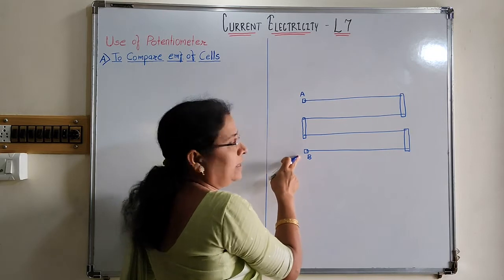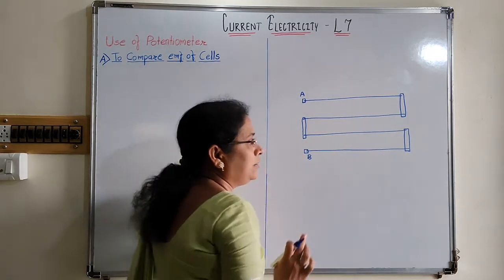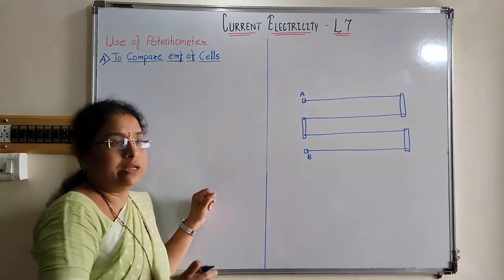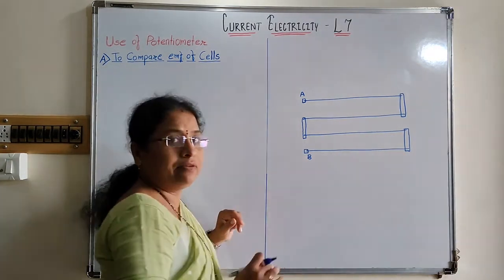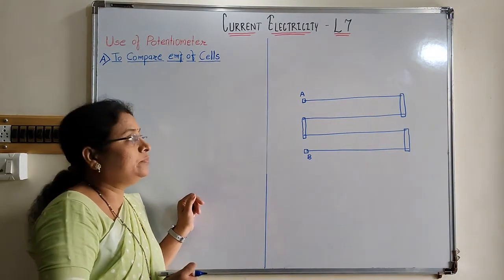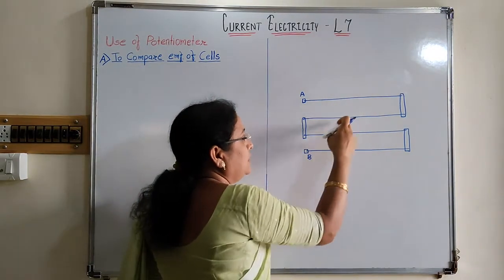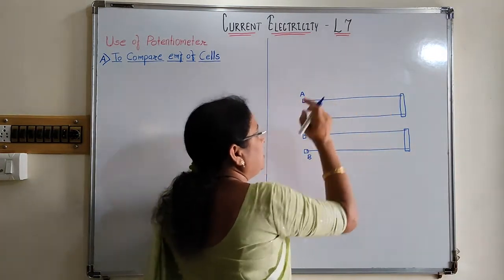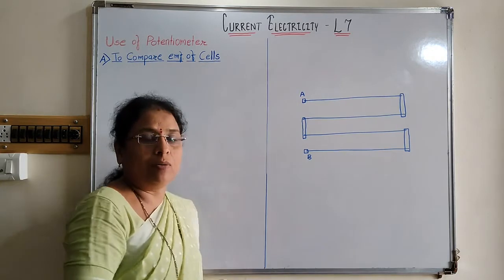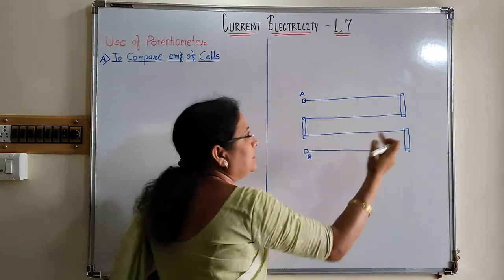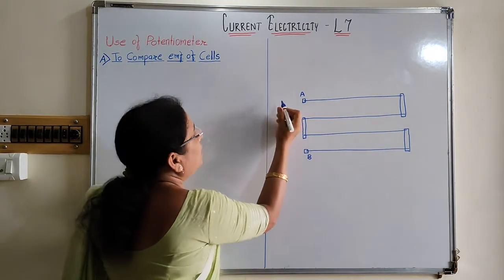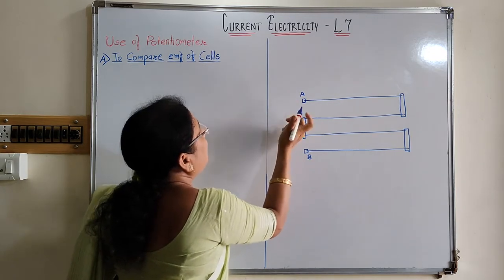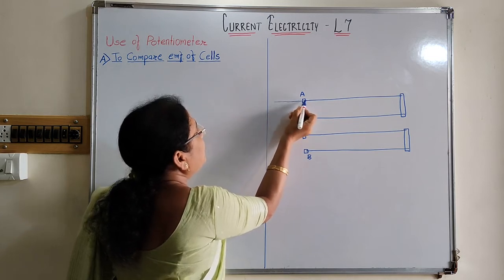We use copper strips or steel strips to connect the wire so that we can consider the wire is straight. This whole arrangement is fixed on a wooden platform and a scale is given here parallel to the length of the wire so that we can measure the length of the wire. Basically this is the primary circuit of the potentiometer. In each case, we have to connect the battery, key, and rheostat in series with the wire AB.